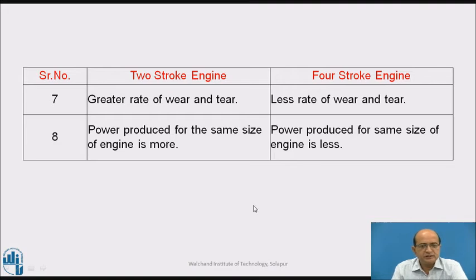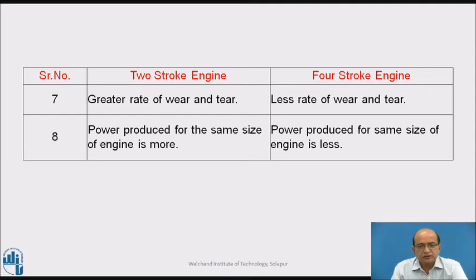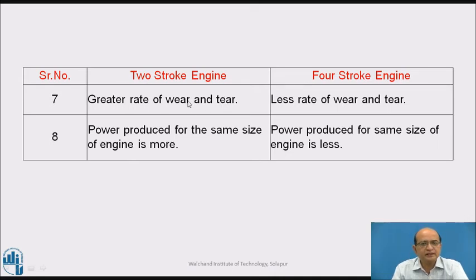The next point of comparison is the wear and tear of the engine. In case of the two-stroke engine, wear and tear will be more because combustion takes place in each revolution. Whereas in the four-stroke engine, combustion occurs less frequently and a separate valve system is provided, so lesser wear and tear occurs. The higher engine speed of the two-stroke engine also contributes to greater wear and tear compared to the four-stroke engine.